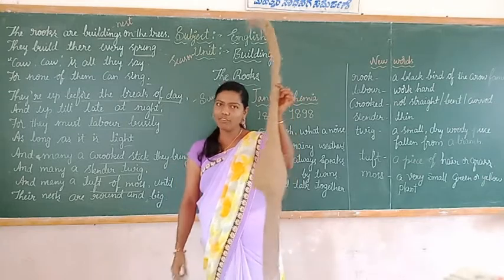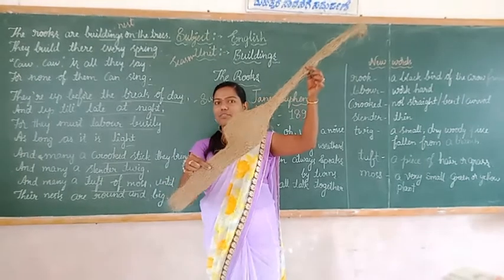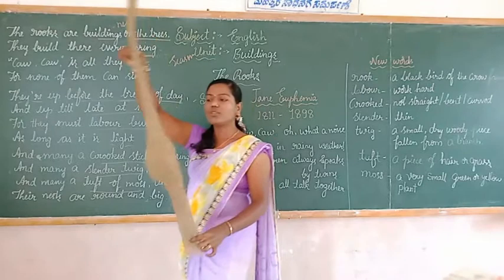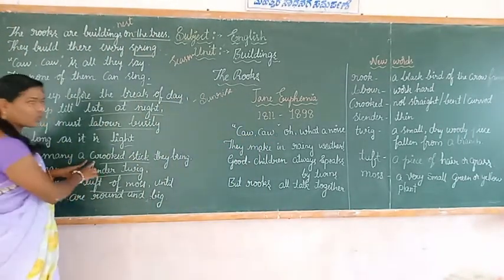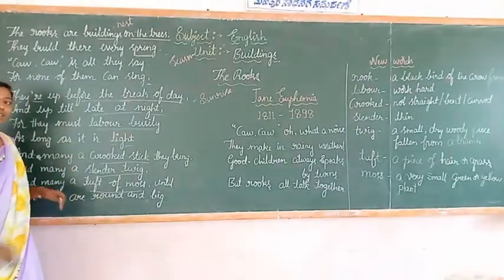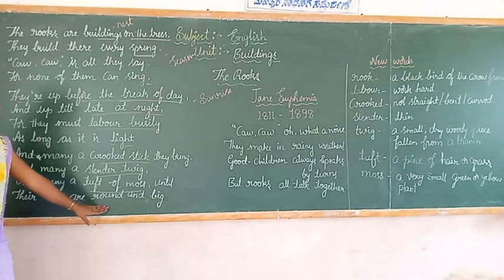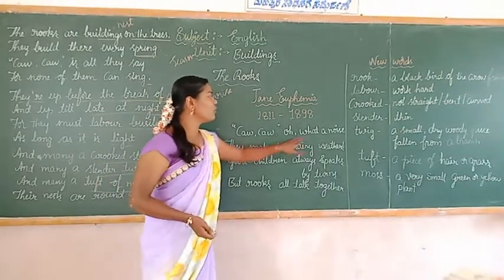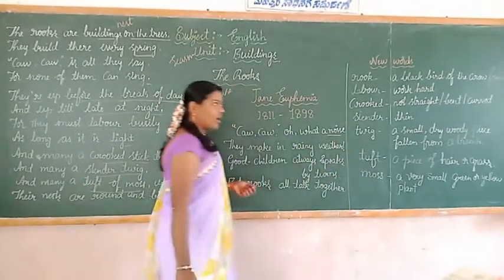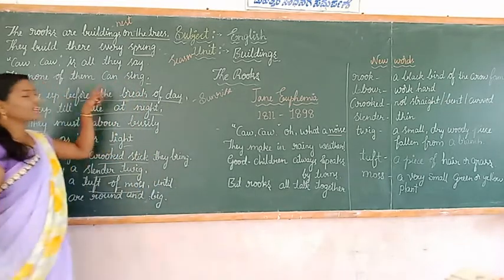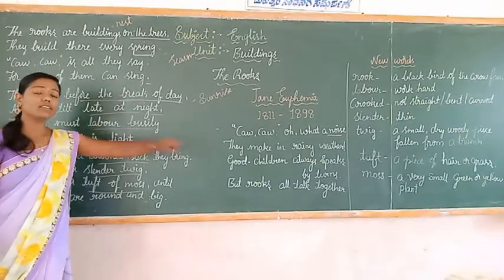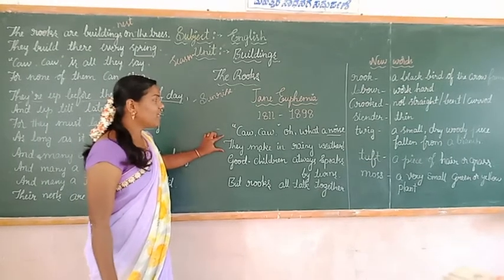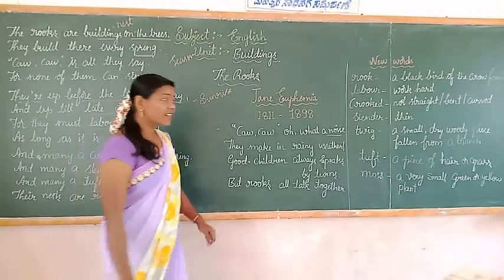So how is the nest? The rook's nest is very beautiful, very big, and round in shape. The rooks built their nest with the help of collecting crooked sticks, slender twigs, and tufts of moss. The rook's nest is very round and big, and it is very beautiful. Now let us start the fourth stanza: caw caw, what a noise! In the first stanza I told you the crow sings like caw caw, for none of them can sing. They make this sound in rainy weather.